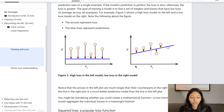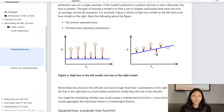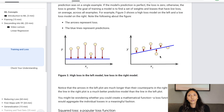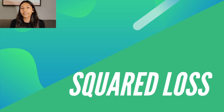The most common function for calculating loss is squared loss. If you simply take the actual data point minus the predicted value, you might end up with a negative value — for example, if your data point is below the line, the loss would be negative. That's not a good indicator. So the most basic function for calculating loss is called squared loss, because when you square a value, any result is positive. Let's look at the squared loss function and how we calculate it.